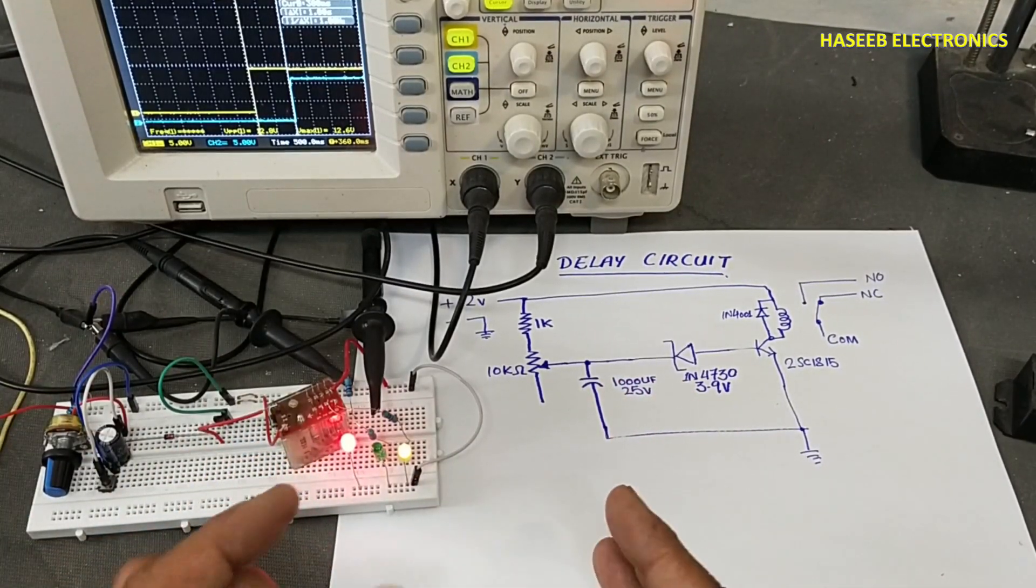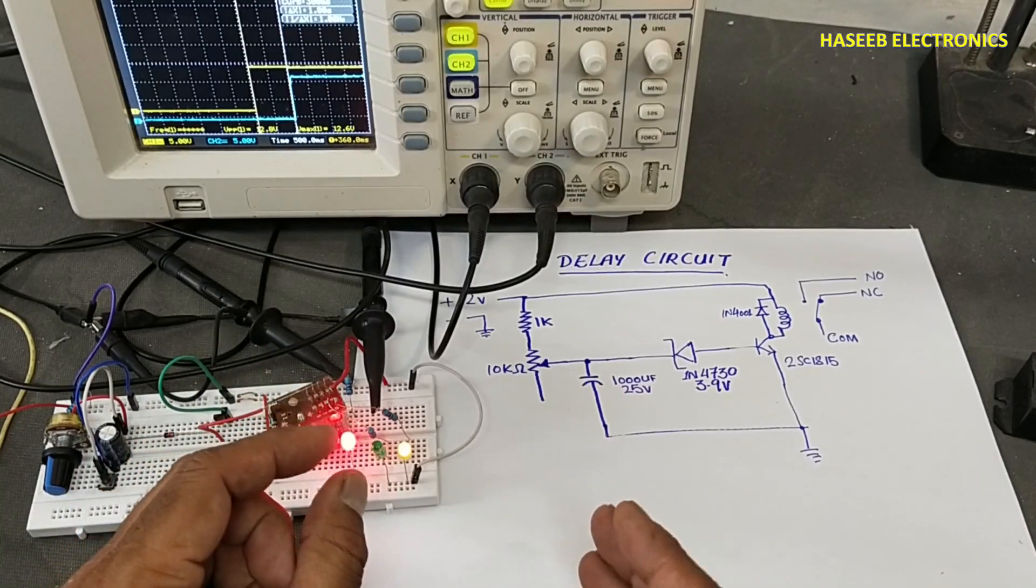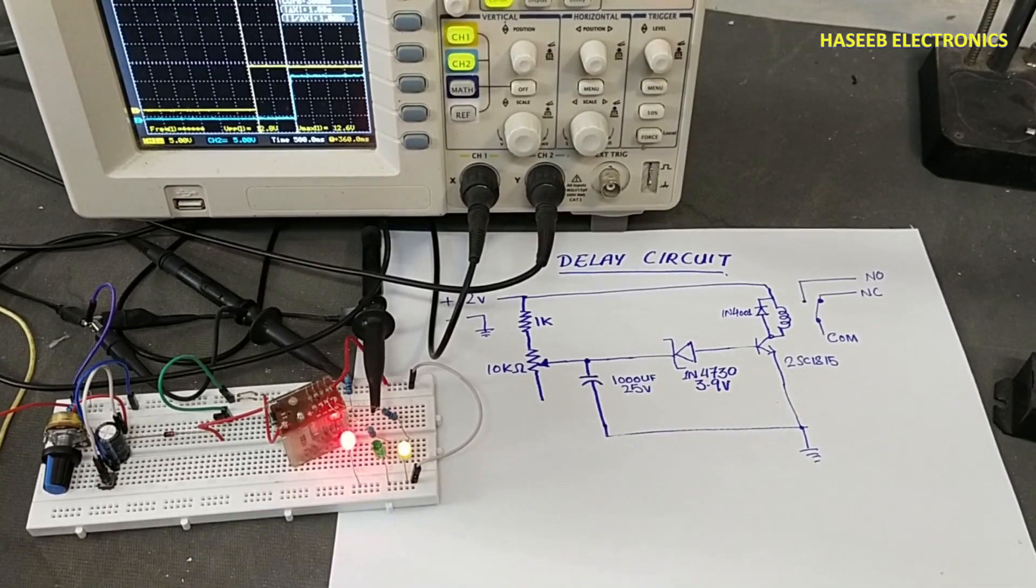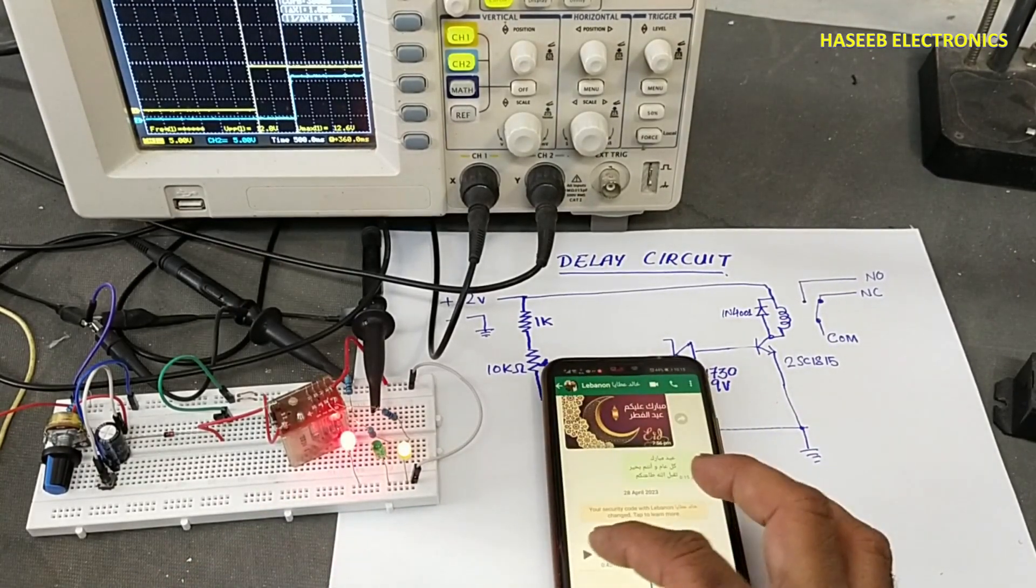We can control any item for one second turn on, or we can provide delayed power to the output. Basically it is a question from my viewer.